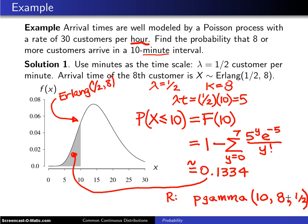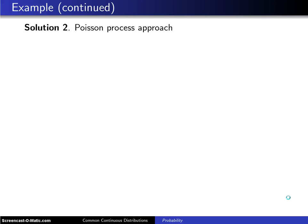Here is the second solution to the problem, and this one has a little more of a Poisson process feel to it. As before, you let lambda over the 10-minute interval be your 30 customers per hour multiplied by one-sixth of an hour, and that will give you, as before, five customer arrivals during a 10-minute interval.